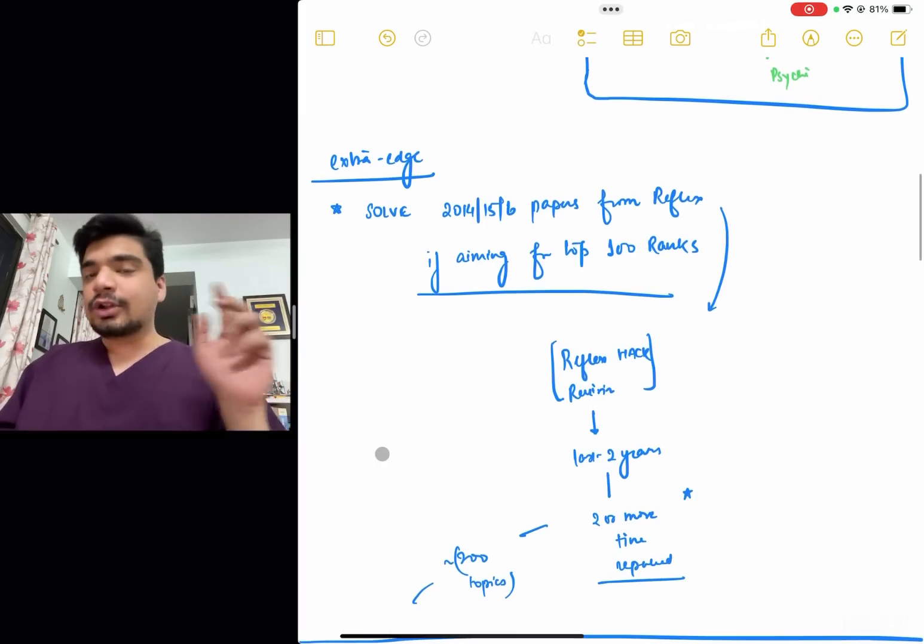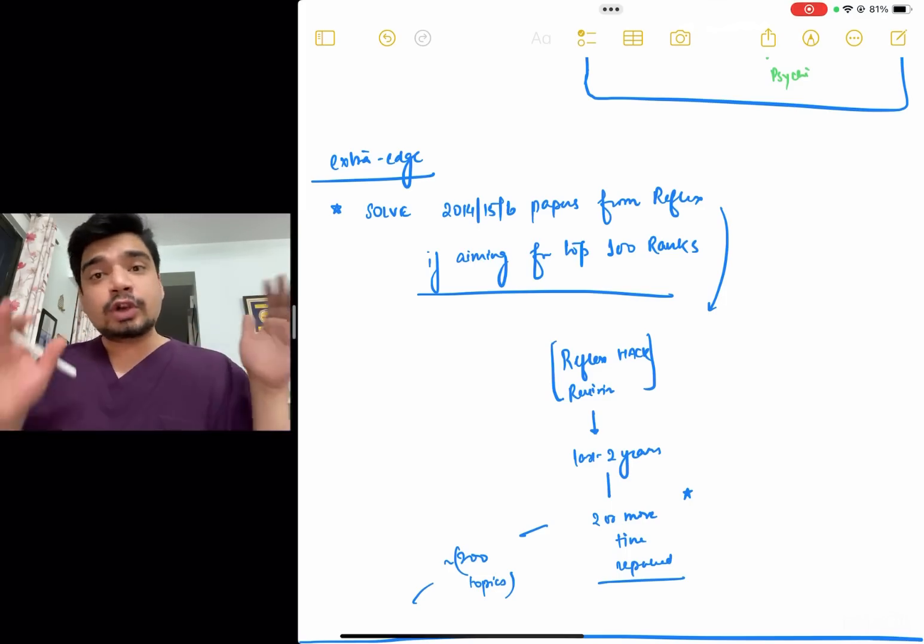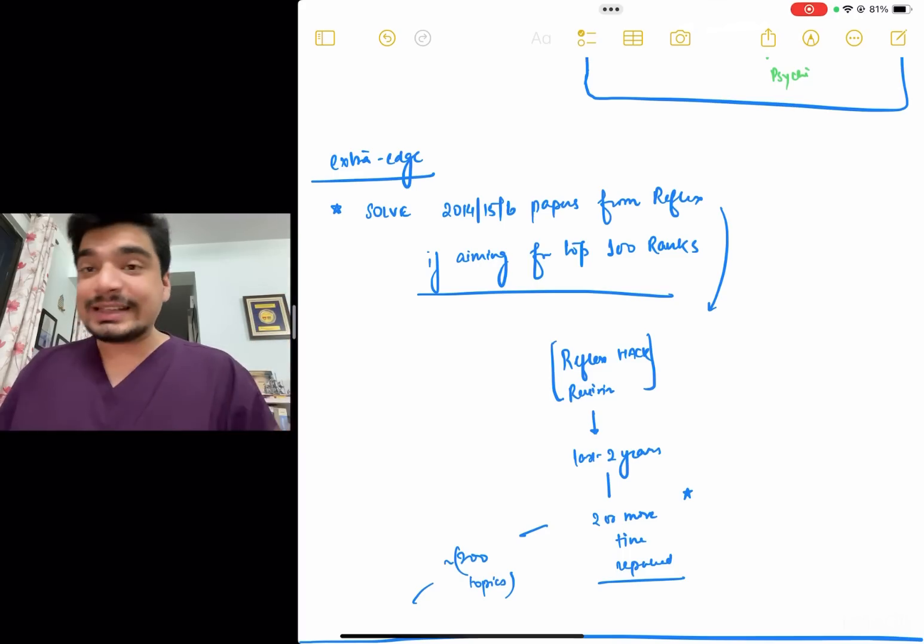Apart from that, in Reflex also, there is another thing which is the revision PDFs. Me and Divya, last time, we gave it for free for a brief period of time. There is a revision PDF of 200 page PDF which has, from the past three years, we decoded the 200 topics that have been asked at least twice or thrice.